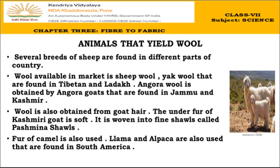Several breeds of sheep, camels, and yak found in different parts of India yield different types of wool. The wool commonly available in the market is sheep wool. Yak wool is found in Tibet and Ladakh, which are cold snowy areas where yak lives. Angora wool is obtained from angora goats, found in Jammu and Kashmir.